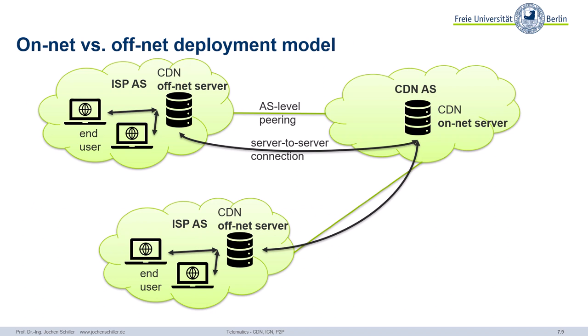On-net means the CDN has its own network, its own autonomous system, and the cache is in the autonomous system of the CDN provider. Off-net means you're inside the autonomous system of an ISP — you're closer to the customer, but you have a server in someone else's autonomous system, which is a bit more complex. However, the delay is lower compared to the on-net solution.